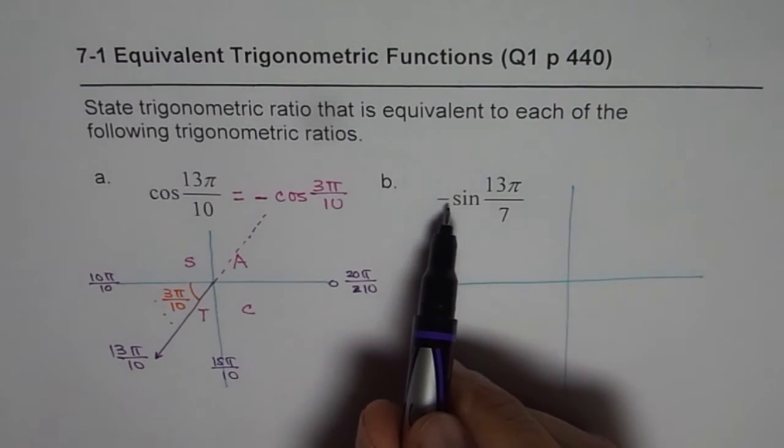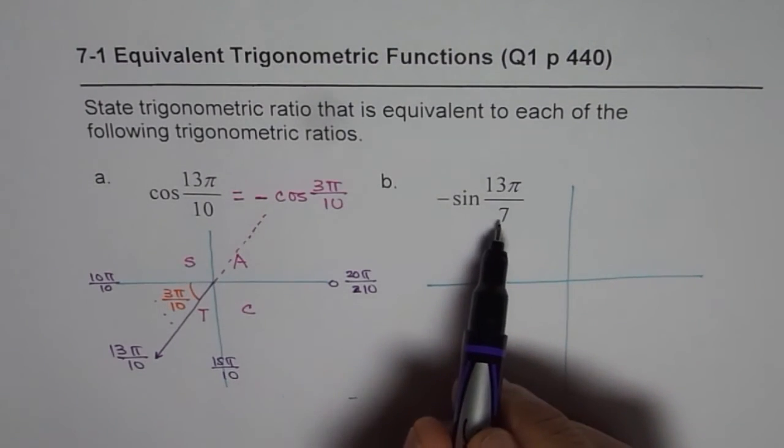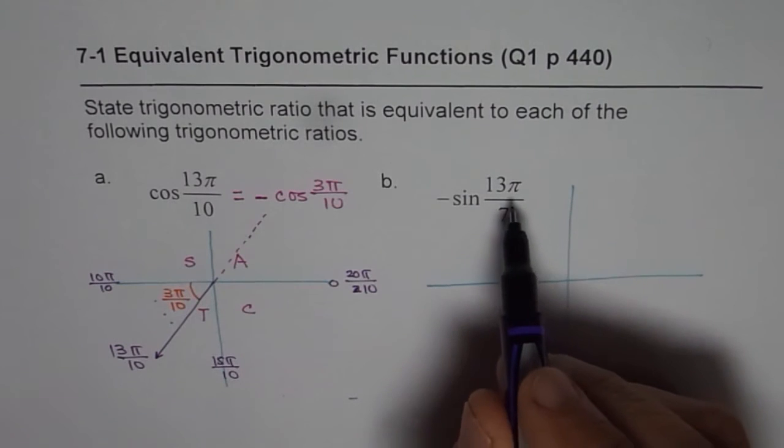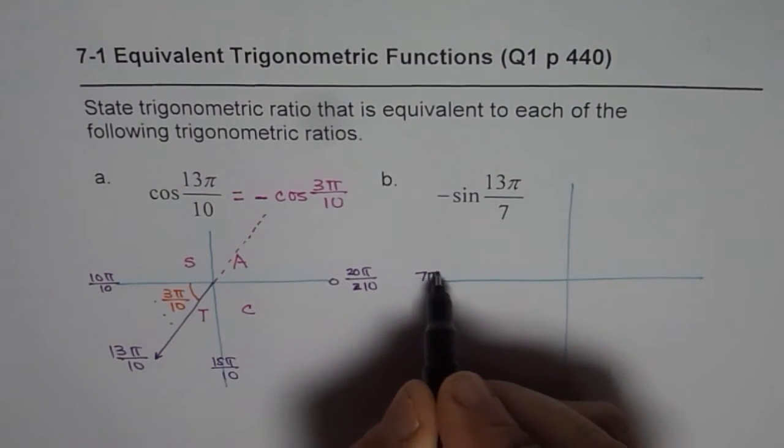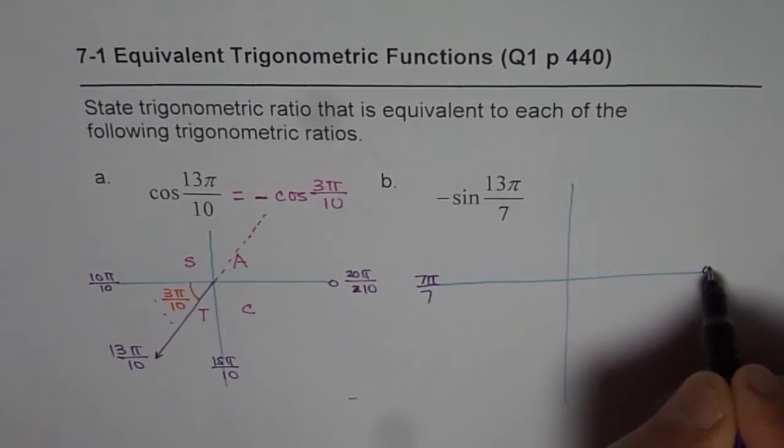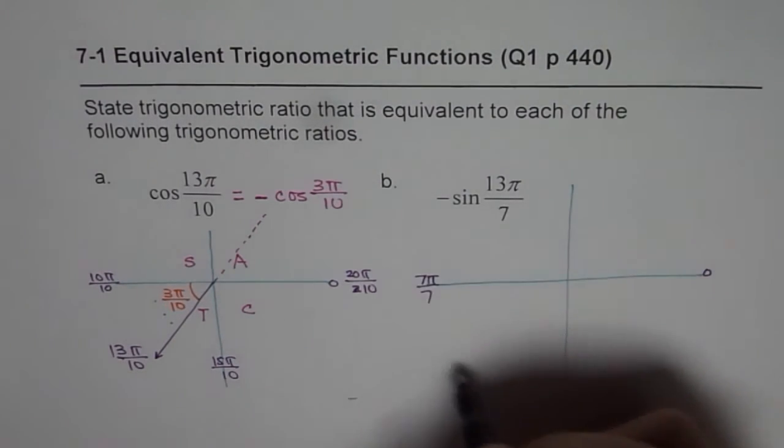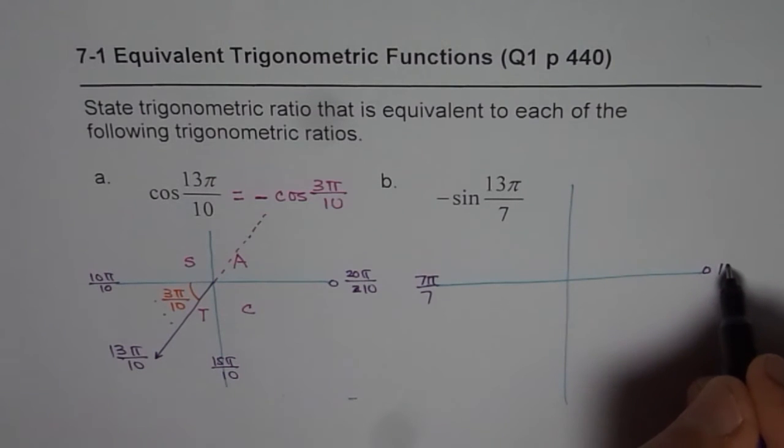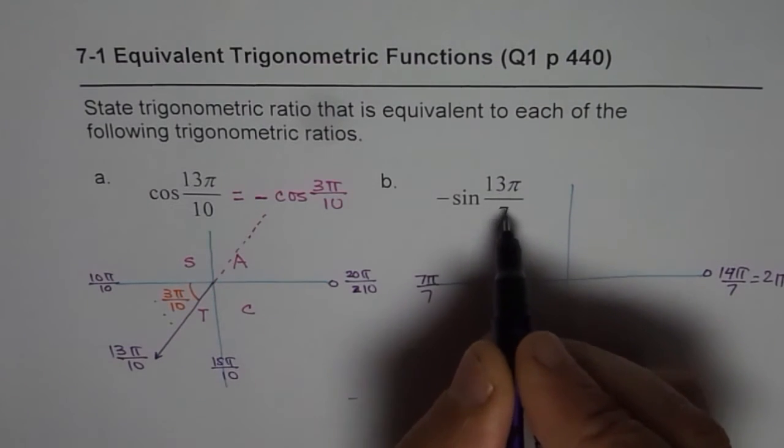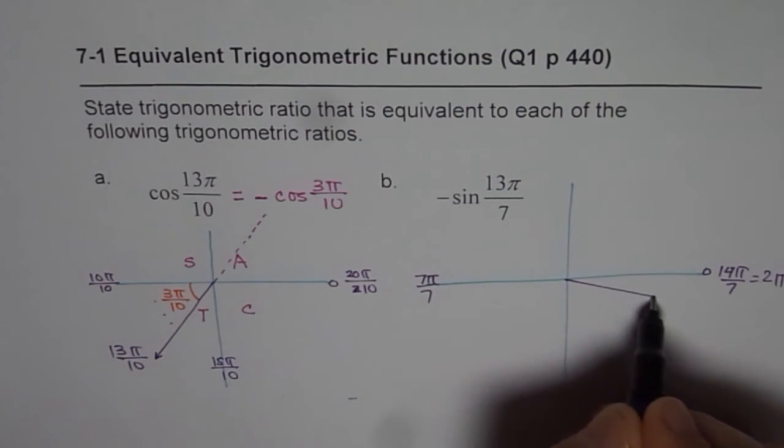So when we say minus sin 13π by 7, then where do I land? π by 7 means this is 7π by 7. We are starting with 0. And 13, we are going to end with 14, I mean 14π by 7. That is 2π, correct? So 13π by 7 basically will be somewhere here.